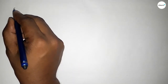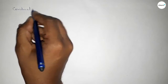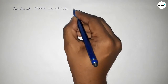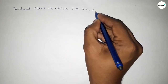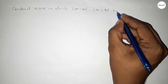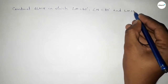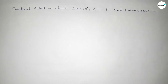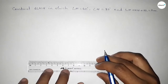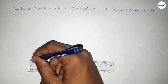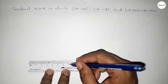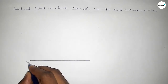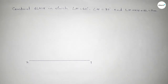Hi everyone, welcome to SI Share Classes. Today in this video we have to construct a triangle LMN in which angle M equals 60 degrees, angle N equals 80 degrees, and the sum of three sides equals 11 centimeters. So let's start the video. First of all, we have to draw a line of length 11 centimeters, taking point X at one end and point Y at the other.